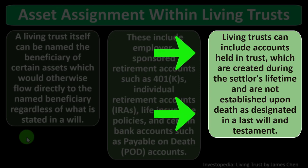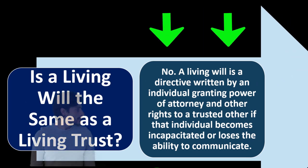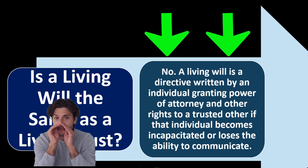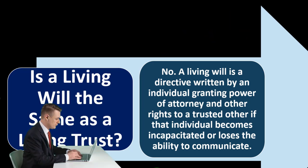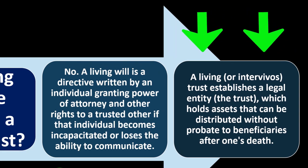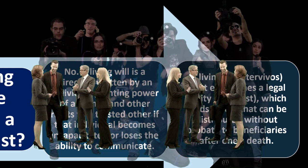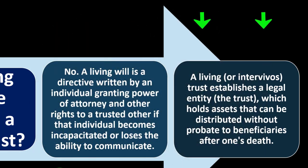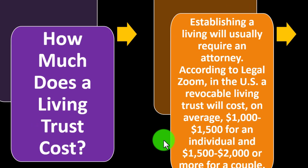A living trust itself can be named the beneficiary of certain assets — including employer-sponsored retirement accounts such as 401(k)s, IRAs, life insurance policies, and payable-on-death bank accounts. Living trusts can include accounts held in trust, created during the settler's lifetime. Is a living will the same as a living trust? No — a living will is a directive granting power of attorney to a trusted other if the individual becomes incapacitated. A living trust establishes a legal entity that holds assets and can distribute them without probate after death.